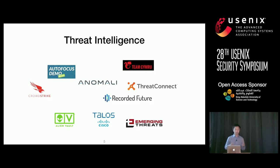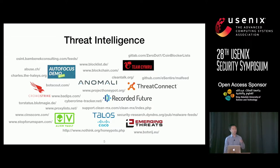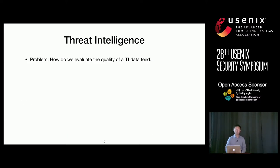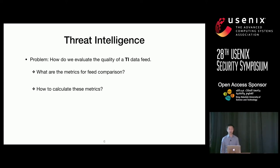Beyond commercial threat intelligence providers, there are also many public data sources managed by individuals or organizations which we can access for free. Now with so many data sources available, assume we are a person in charge of protecting our company's network — there is an immediate question: which product should we choose? We need an objective way to evaluate the quality of threat intelligence products and a set of metrics for fair comparison, along with techniques for calculating those metrics. However, no such standard exists in the community, and this is what our work tried to address.